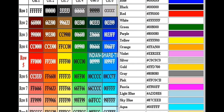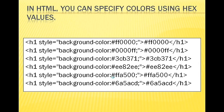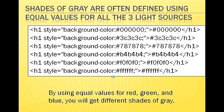Technology has advanced so much that colors are easily available in the browser. We just need to know the basics. In HTML, you can specify colors using hex values. Also, in hex values, gray shades appear when equal values are defined - all three light sources must be the same. For example, #000000, #3C3C3C, #787878 - when red, green, and blue use equal values, different shades of gray appear.